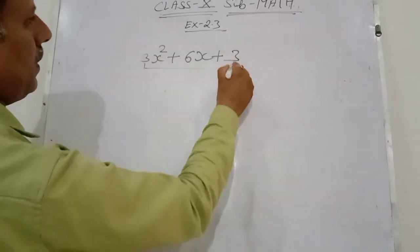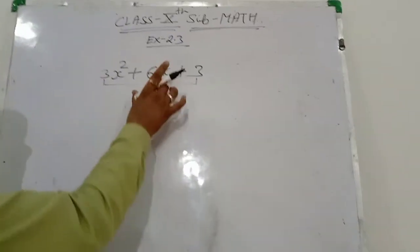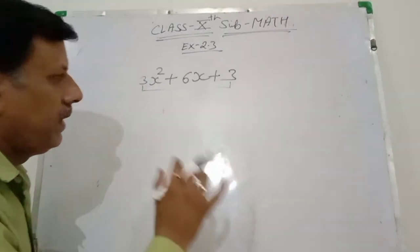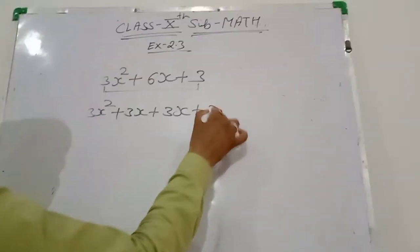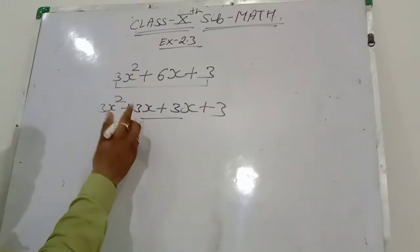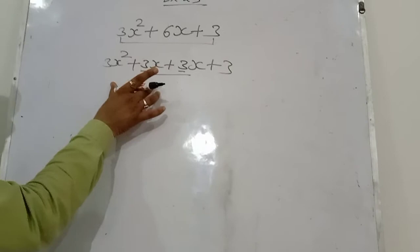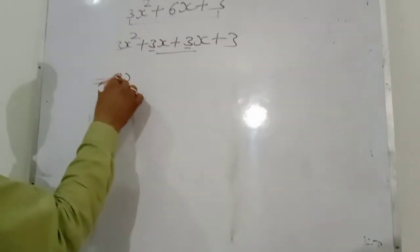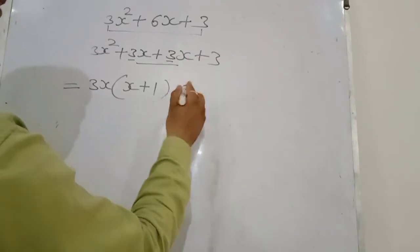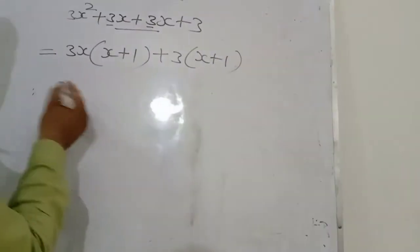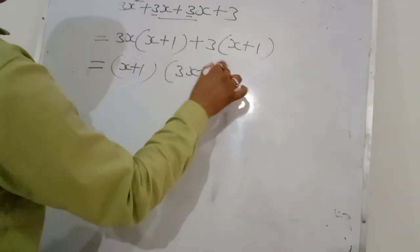Quotient 3x² + 6x + 3 को factorize करते हैं. 3 × 3 = 9, और दो terms ऐसे बनाने हैं जिनको add करने पर 6x आए और multiply करने पर 9 आए. So: 3x² + 3x + 3x + 3. यहाँ 3x + 3x = 6x ✓ and 3×3 = 9 ✓. First two terms से common 3x निकालें: 3x(x+1), last two terms से common 3: 3(x+1). So factors are (x+1) and (3x+3).